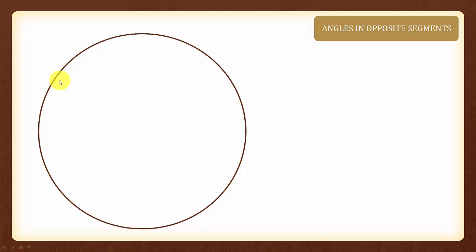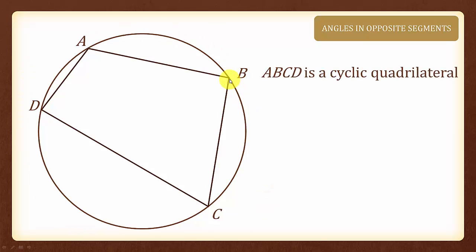Let us start off by drawing four points on the circumference of a circle. And we will join all these four points to form a quadrilateral. Since this quadrilateral is inside a circle touching four points on the circumference, we will call it a cyclic quadrilateral.